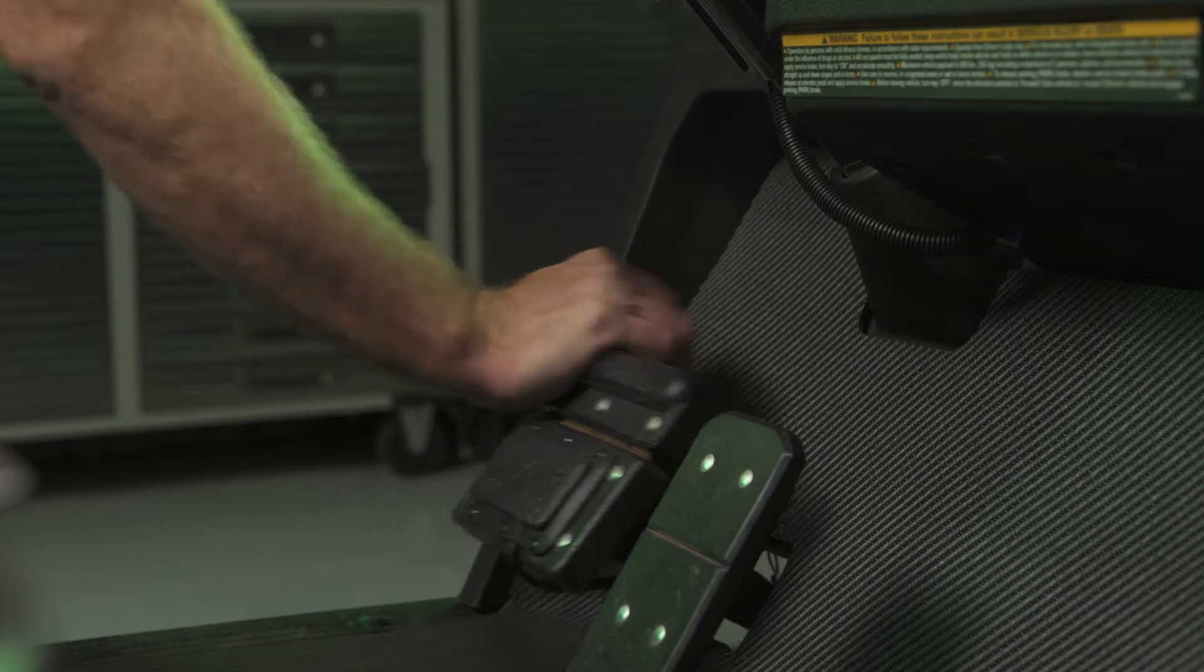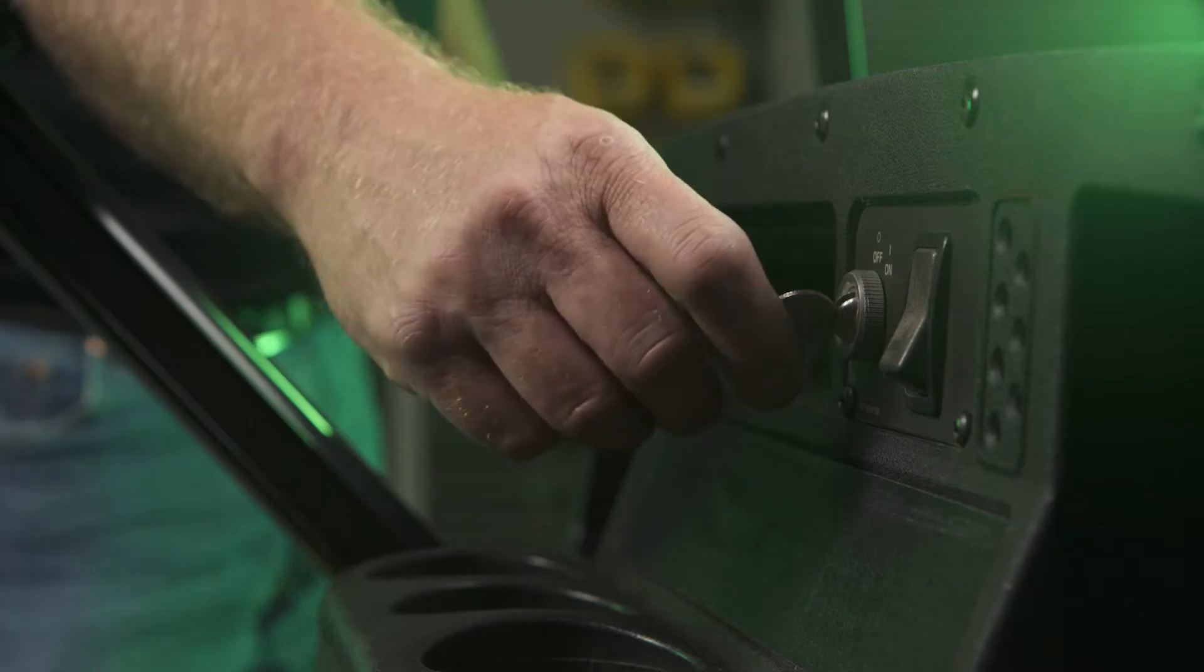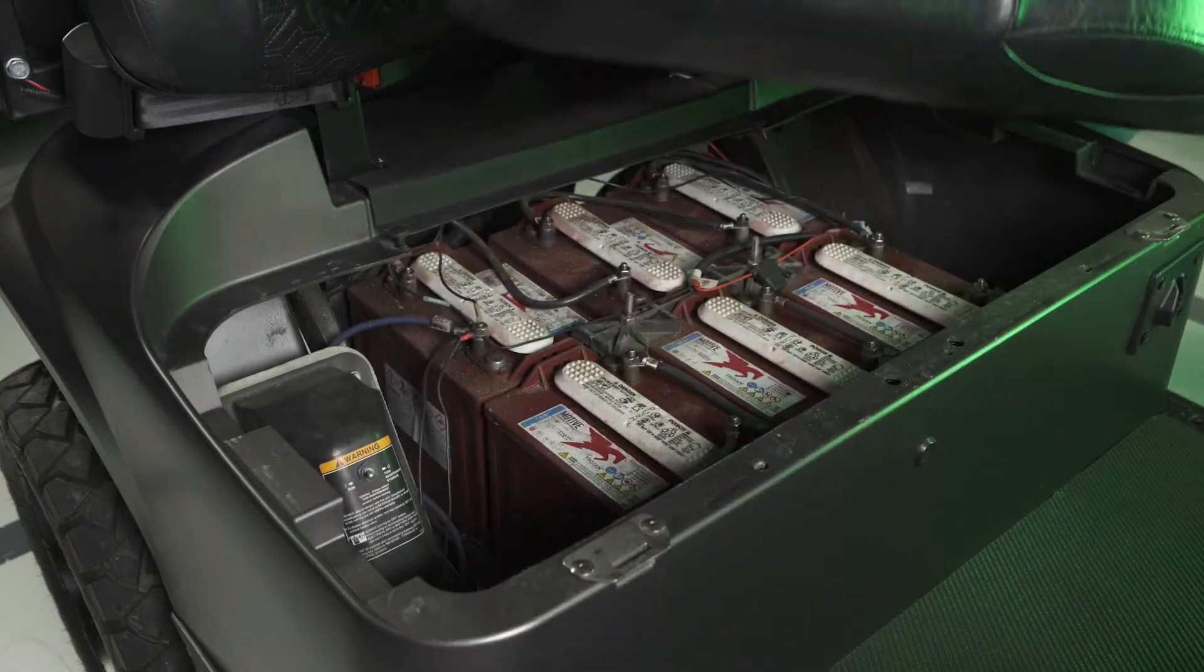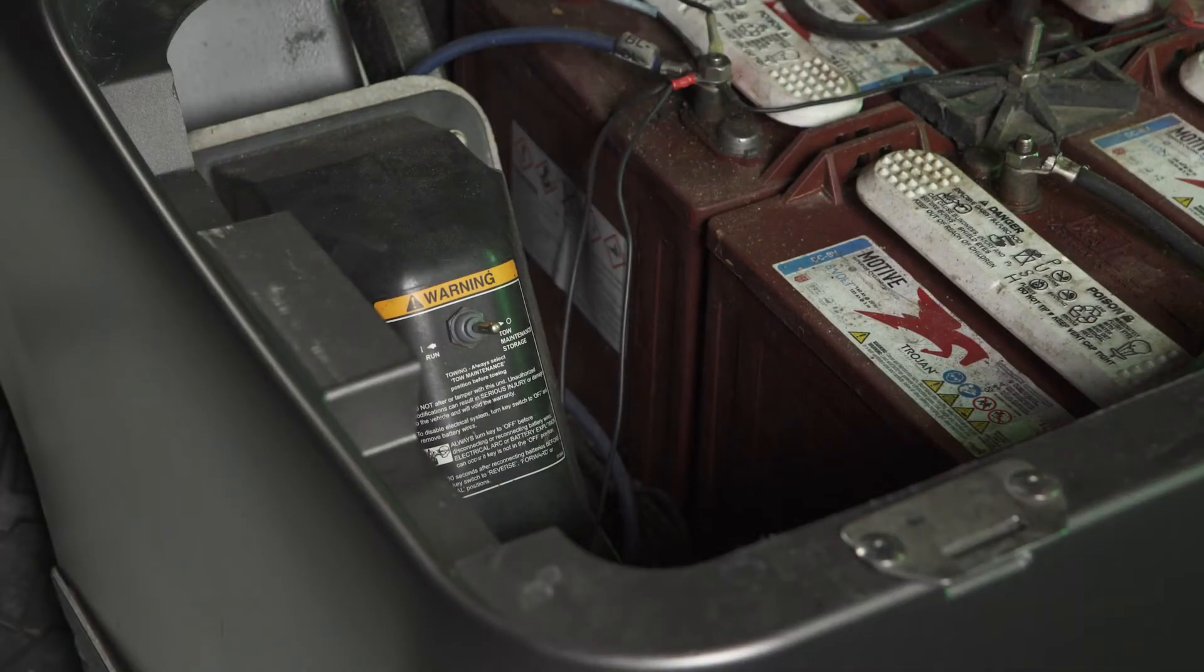Block the cart and set the parking brake to prevent the cart from rolling. Turn the key to the OFF position. Remove the seat by tilting and lifting it straight up. Place the RUN TOE switch in the TOE position.